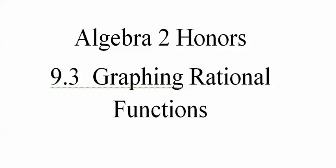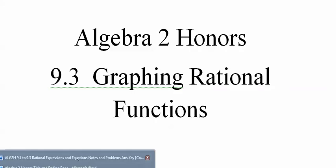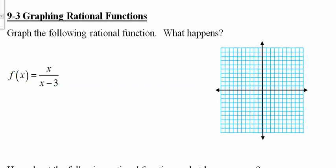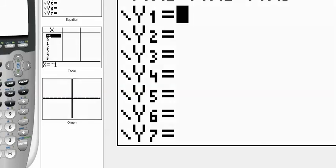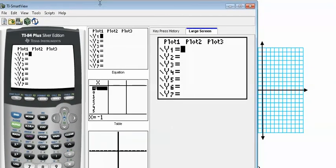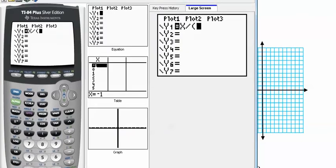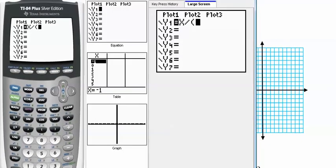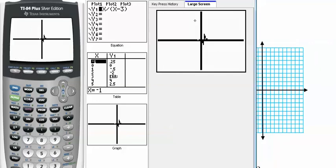Algebra 2 honors lesson 9.3, graphing rational functions. What happens when we graph the following rational function? Let's throw it in the calculator and see what we get. X divided by X minus 3, graph it, see it up here on the right side of the screen.